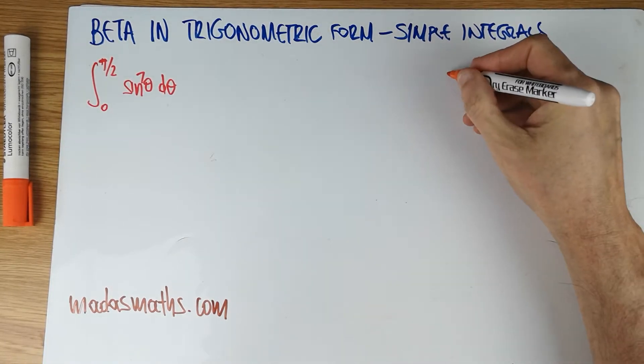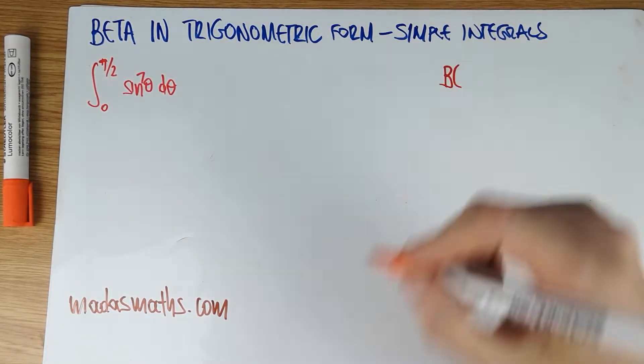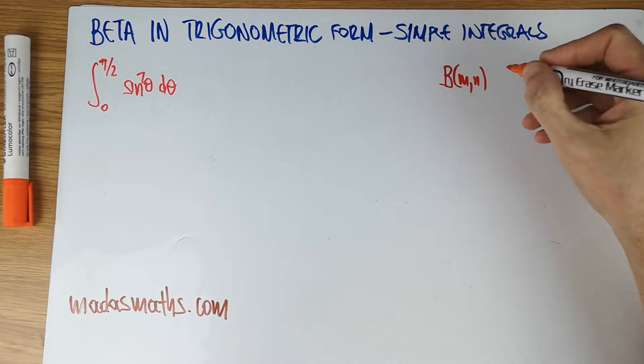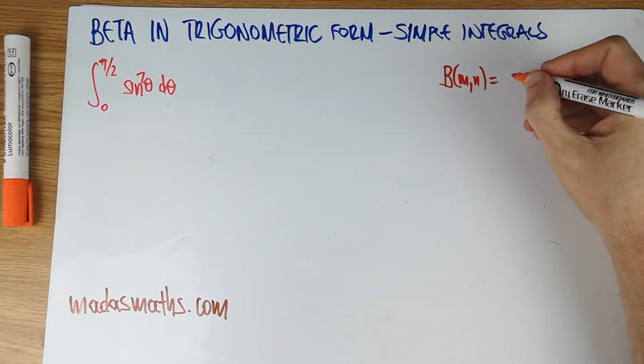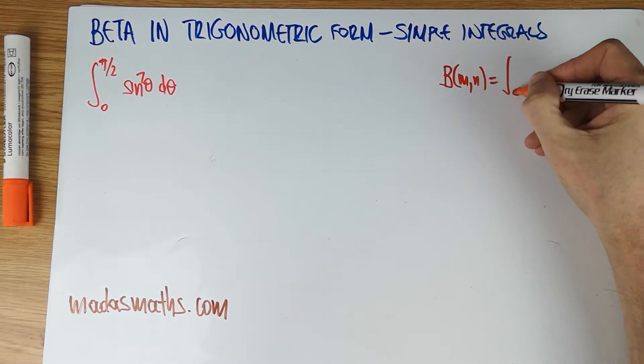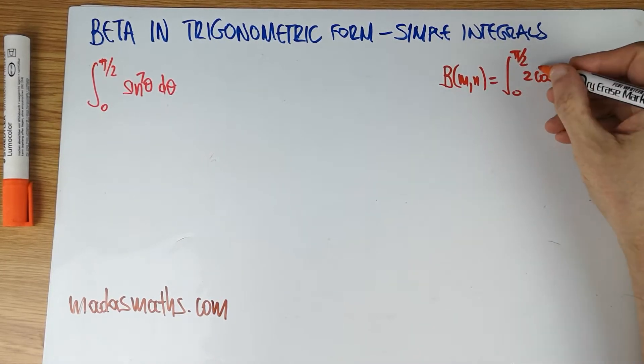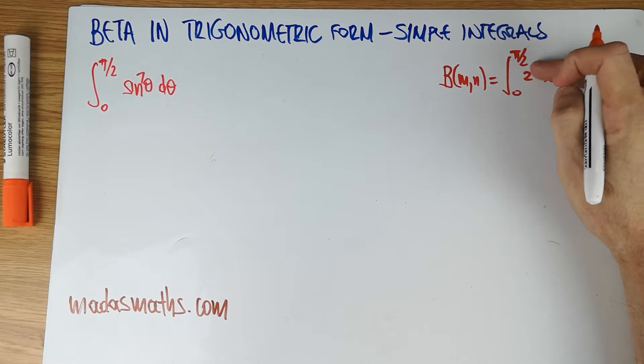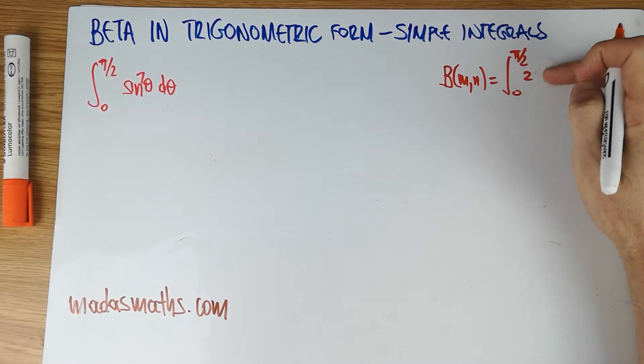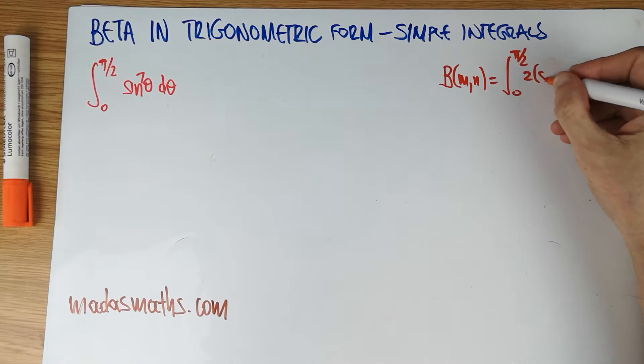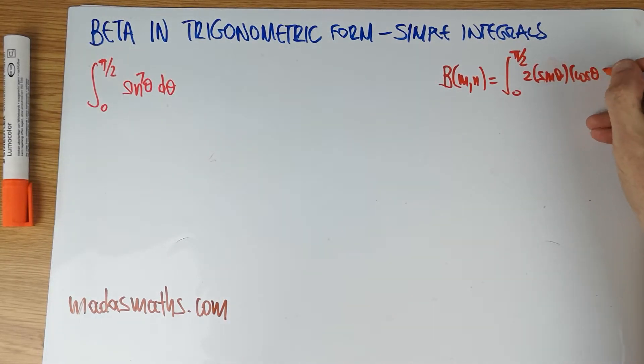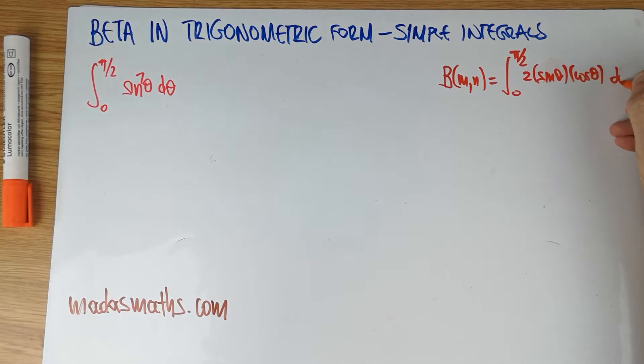And I'm going to write that the beta of m, n is in fact equal to 0 to pi over 2, two lots. Let's put the sine first because normally we're at the sine. Not that it matters, it's symmetric and it doesn't really matter. Sine theta, cos theta, d theta. This is to the power of 2n minus 1 and this to the power of 2m minus 1.